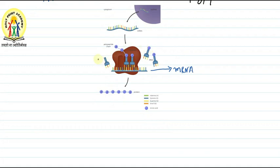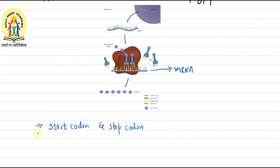The translational unit in any mRNA — the unit that is getting translated — is flanked by a start codon and a stop codon. There is also something important called UTRs, which are the untranslated regions present on the mRNA. They do not take part in translation, but they are very important for efficient translation to take place. UTRs are present before the start codon.